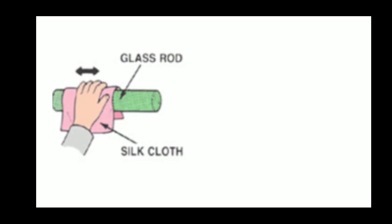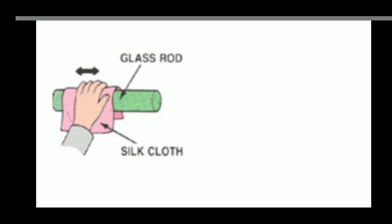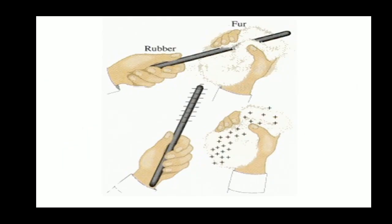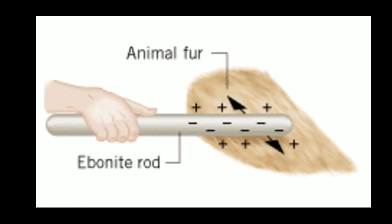Ebonite rubbed over animal fur or any flannel cloth: the ebonite rod gets negatively charged and the animal fur gets positively charged. When glass is rubbed over silk: the glass becomes positively charged and the silk becomes negatively charged. So in all these cases, one object is positive and another one is negative.